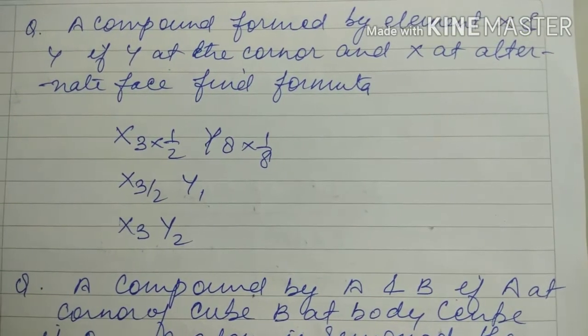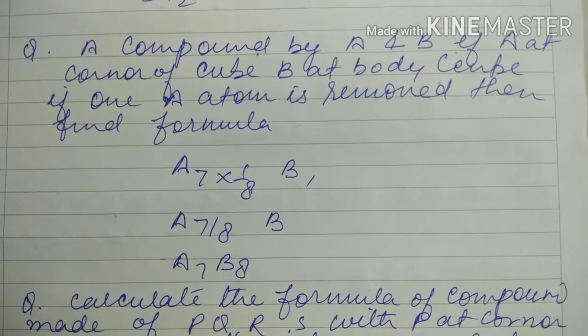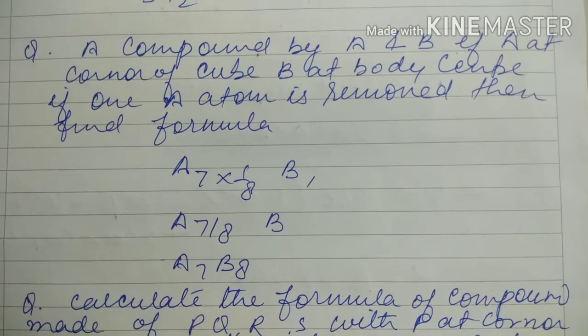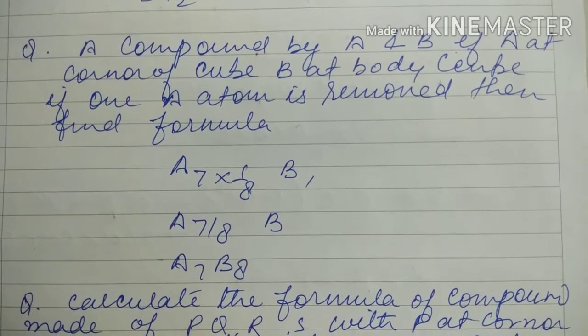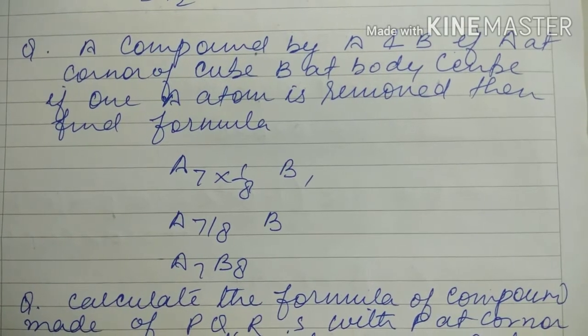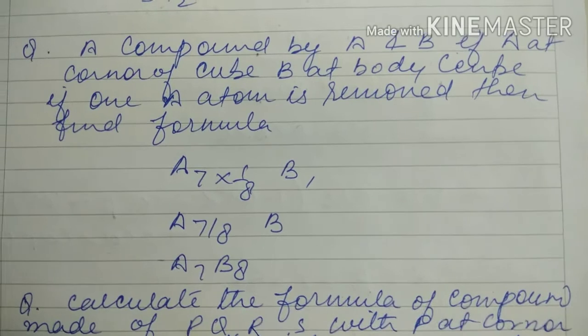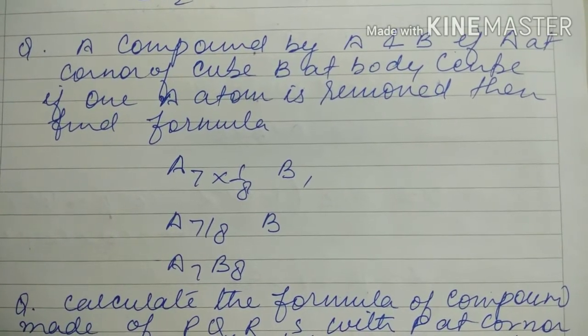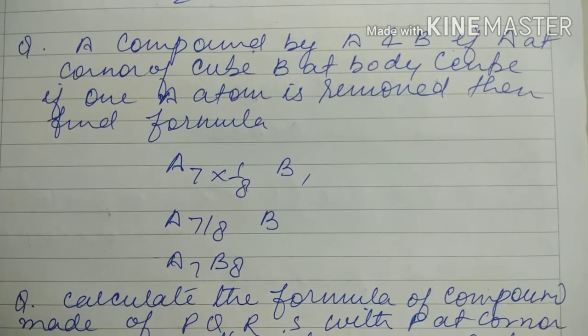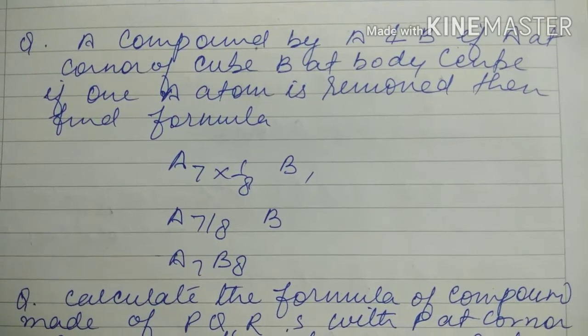So X is 3/2 and Y is 1, so formula becomes X3Y2. Next question: compound by A and B. A at the corner and B is body centered. If one A atom is removed, then find out the formula. So A is FCC, but in place of 8, one is removed at the corner, then it becomes 7 times 1/8.